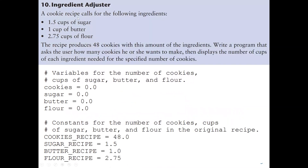The first problem says a cooking recipe calls for the following ingredients: 1.5 cups of sugar, 1 cup of butter, and 2.75 cups of flour. The recipe produces 48 cookies with this amount of ingredients. Write a program that asks the user how many cookies he or she wants to make, then display the amount of cups of each ingredient needed for the specified number of cookies.